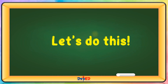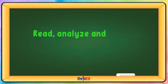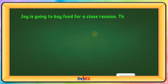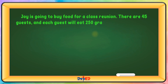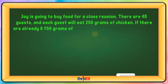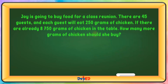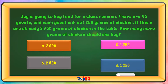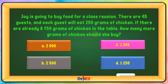Let's do this. Read, analyze, and answer the following problems. Joy is going to buy food for a class reunion. There are 45 guests, and each guest will eat 250 grams of chicken. If there are already 8,750 grams of chicken on the table, how many more grams of chicken should she buy? A. 2,000  B. 2,500  C. 1,250  D. 1,250. The correct answer is B.